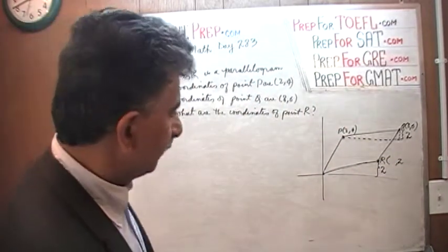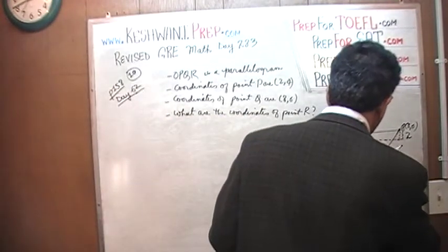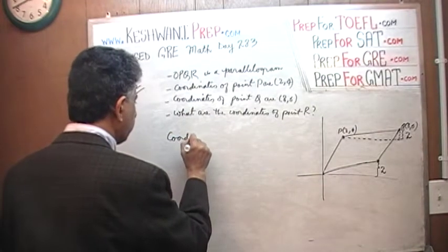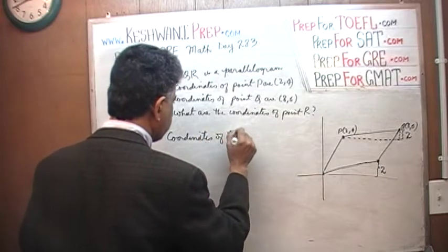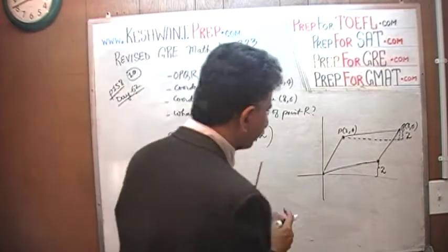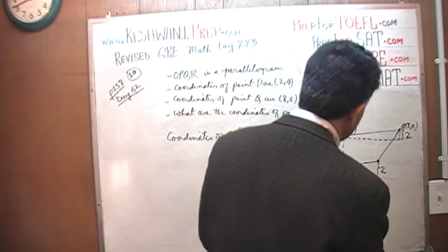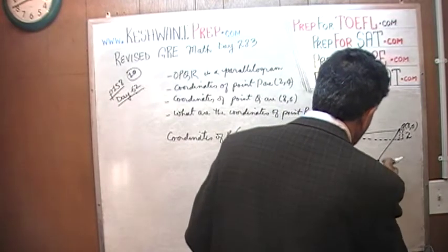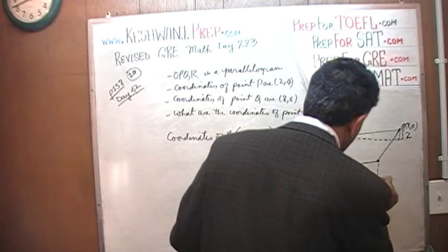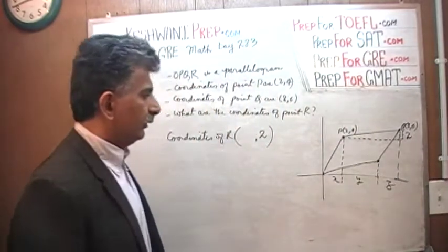Now let's worry about the x coordinate. So we already know that the y coordinate of point R has to be 2. This distance that we see here, let's call it x. This distance that we see here, from here to here, let's call it y. And this distance, let's call it z.